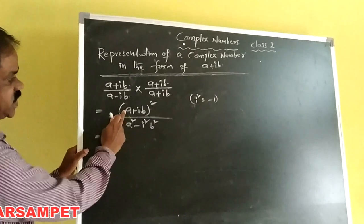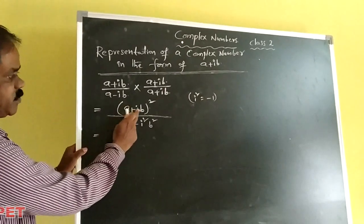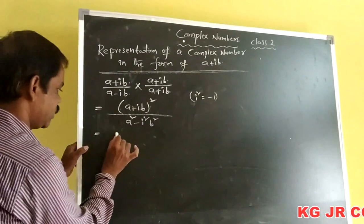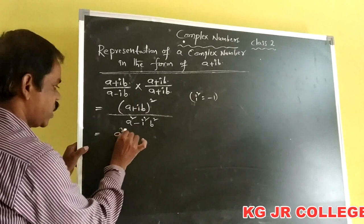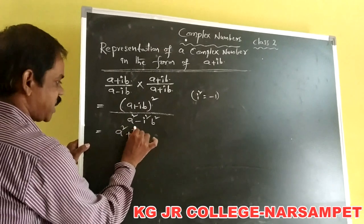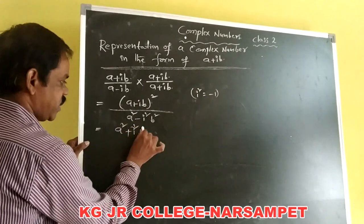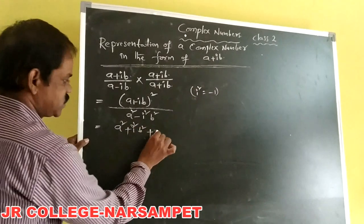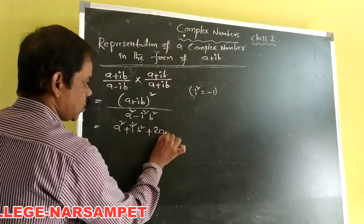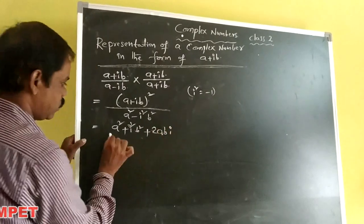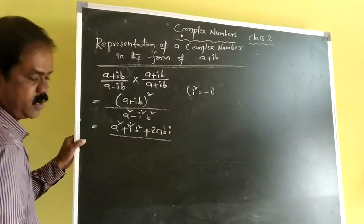So it is in the form of A plus iB whole squared, which gives us A squared plus i squared B squared plus 2ABI, all over the denominator.